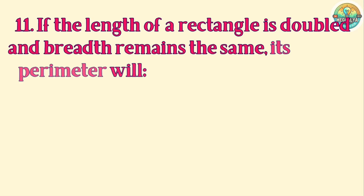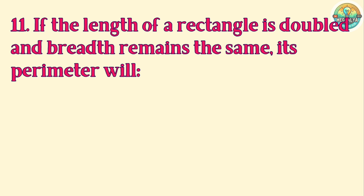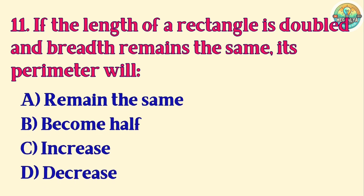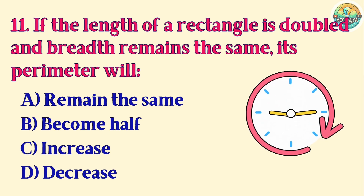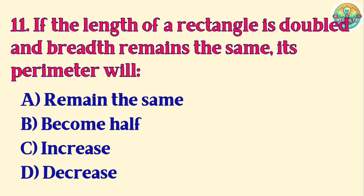Question 11. If the length of a rectangle is doubled and breadth remains the same, its perimeter will: A. Remain the same. B. Become half. C. Increase. D. Decrease. Correct answer is C. Increase.